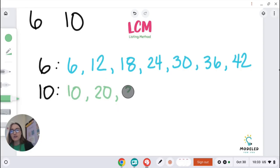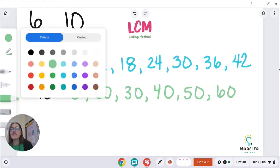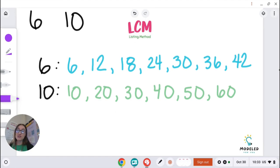Count with me. 30, 40, 50, 60. And I'm going to stop there because I think that's far enough. But if I have to go further in the future I will. So now I have my multiples listed for both 6 and 10.